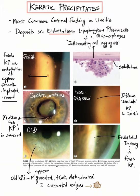Keratic precipitates are the most common corneal finding in uveitis. They are nothing but inflammatory cell deposits on the endothelium of the cornea. They are composed of lymphocytes, plasma cells, and macrophages.